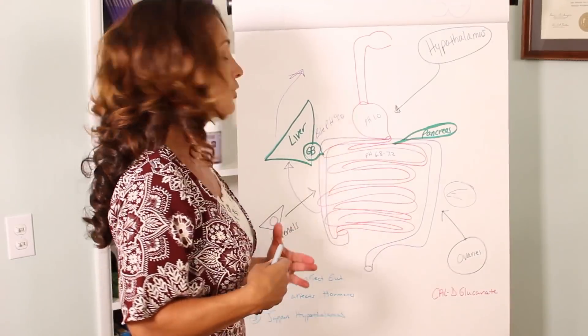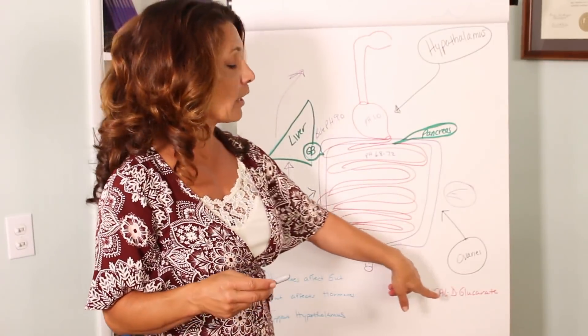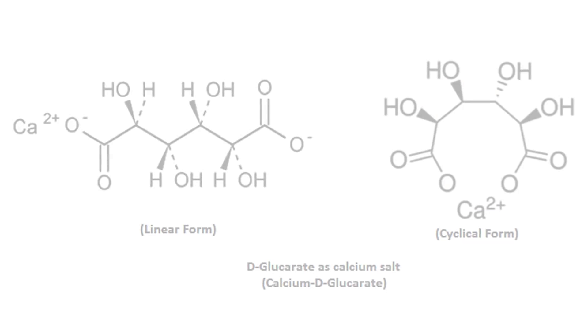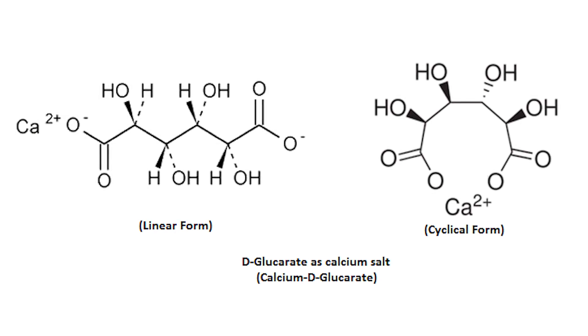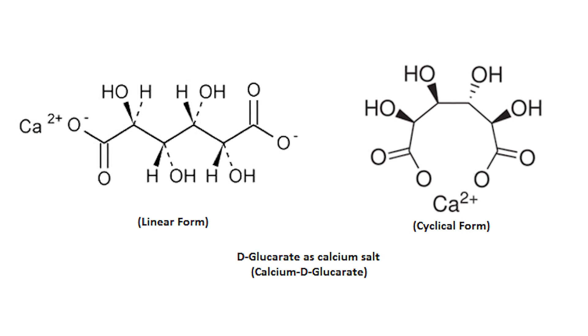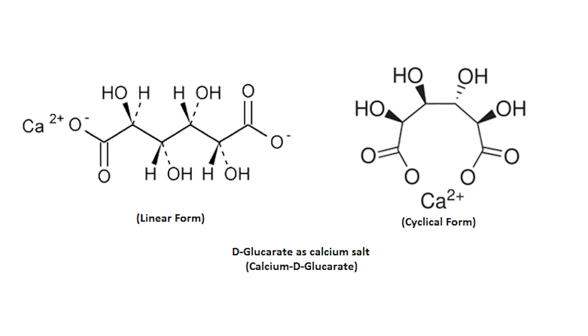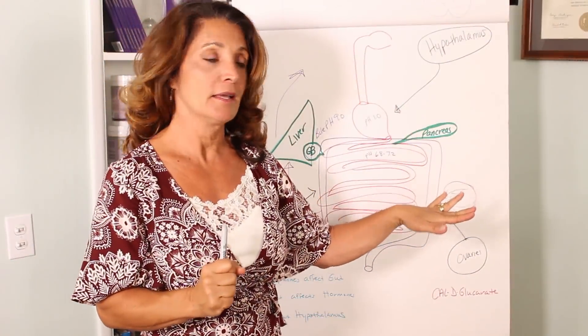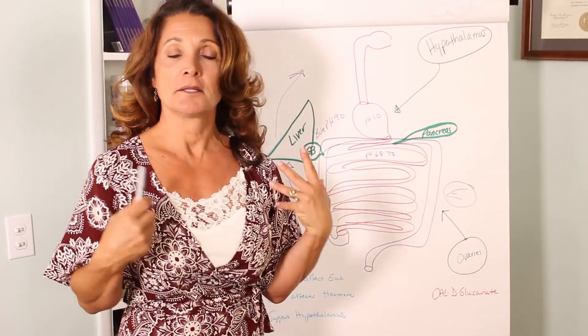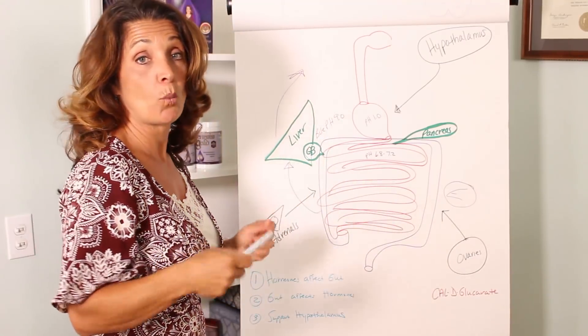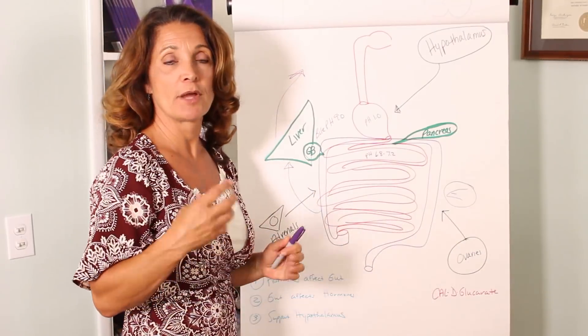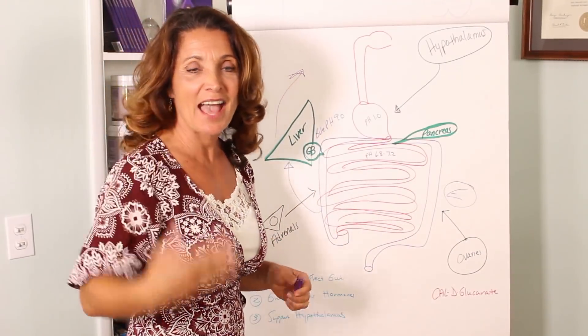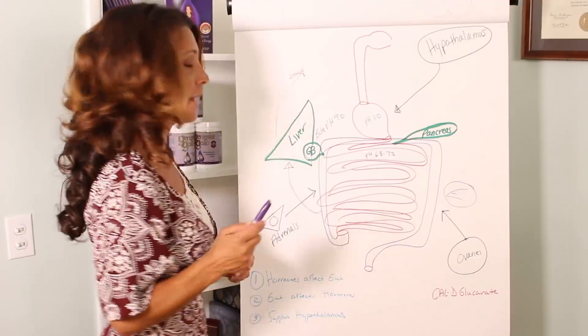So what can you do about that? Well, there is a supplement called Cal-D-Glucorate that actually helps to keep that bond, protects the bond between the hormones and the glucuronidase so that you don't recycle your estrogen back again. And that can be taken twice daily or even one with every meal to actually help to keep your estrogen metabolized and gotten out of the body in a safer manner.